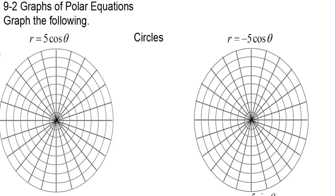Section 9.2, Graphs of Polar Equations. Graph the following: r equals 5 cosine of theta. These are circles, so we have to know a little bit of what this function looks like before we graph it, because we're only going to plot a few points. You must know that these are going to be circles.